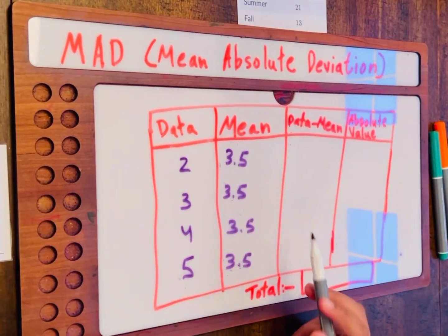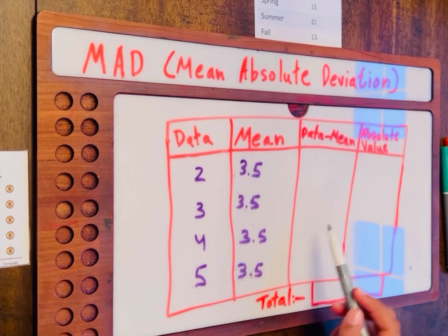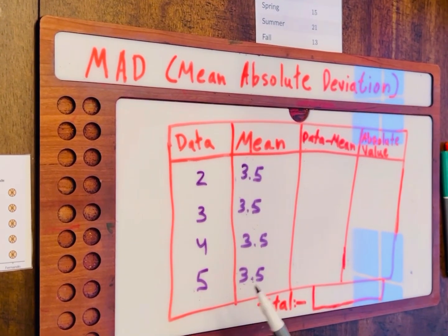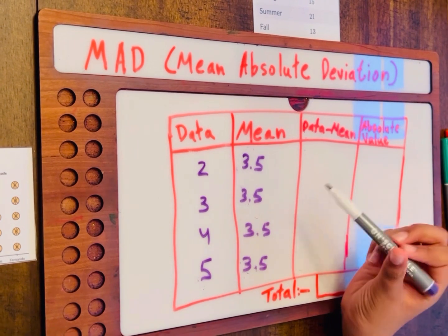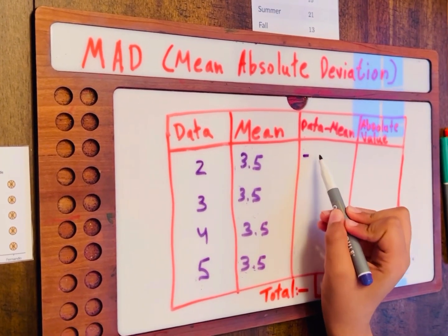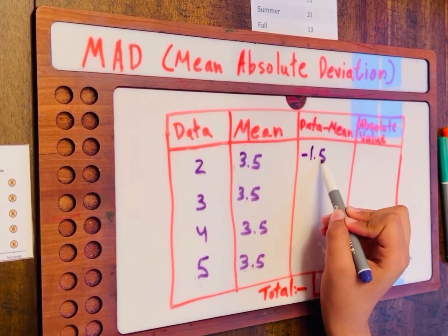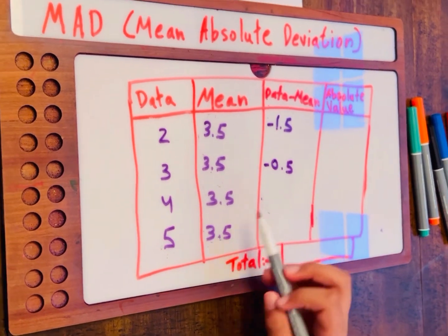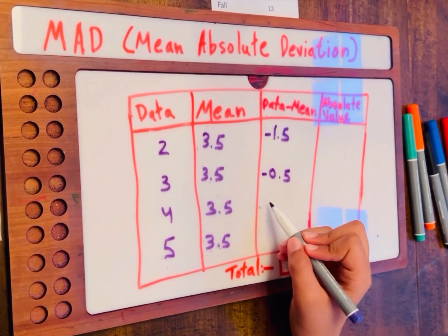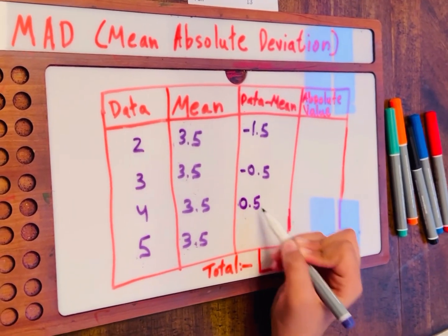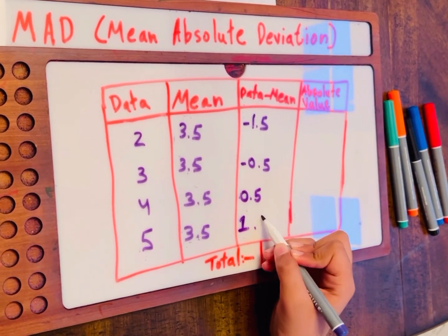Now, we have to find the distance from the mean. So, we basically have to subtract. 2 minus 3.5, that's equal to negative 1.5. 3 minus 3.5 is equal to negative 0.5. This would be positive 0.5. And then this would be 1.5.